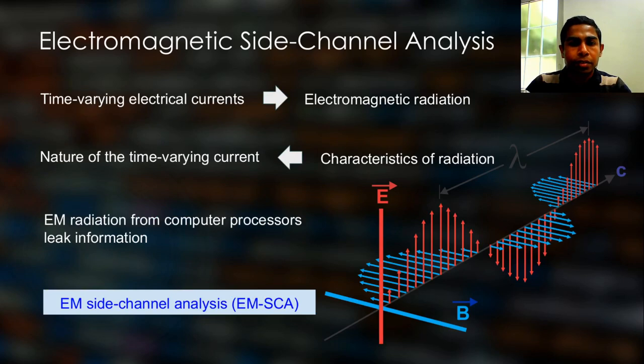Electromagnetic Side Channel Analysis. This can be an entirely new term for some of you, so here are some basics. When an electrical current goes through a wire with variations over time, it causes electromagnetic radiation. The characteristics of this radiation such as frequency, amplitude, and phase directly correlates with the original electrical current.